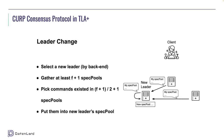The final action is the leader change action. We don't care about how the leader changes — we only care about what we should do after the leader change. When a new leader is elected, it should gather at least f+1 spec pools, including possibly its own. Then it picks commands that existed in at least (f+1)/2 + 1 spec pools, and puts them into its new spec pool. This is the complete action details of the CURP consensus protocol in TLA+.